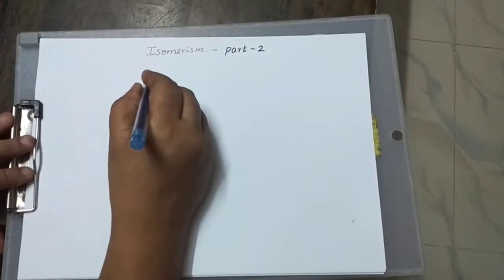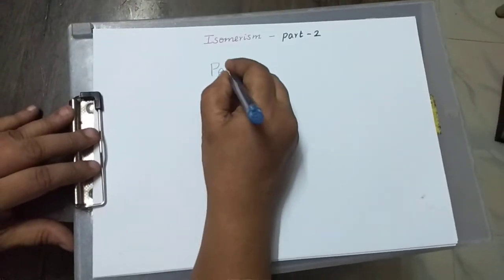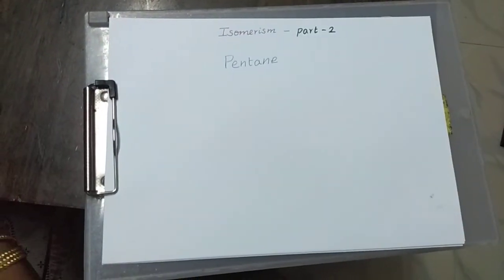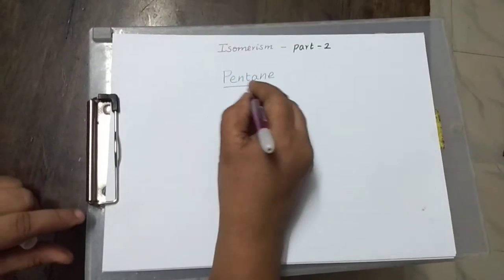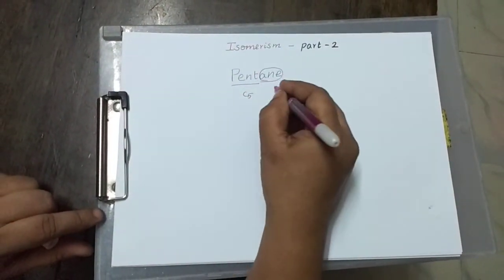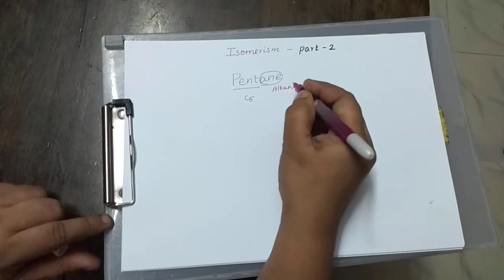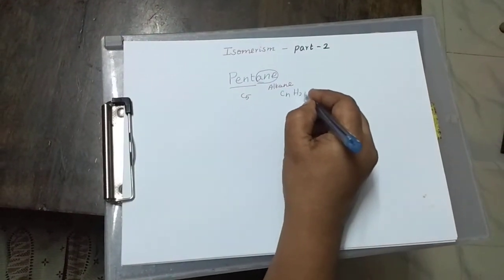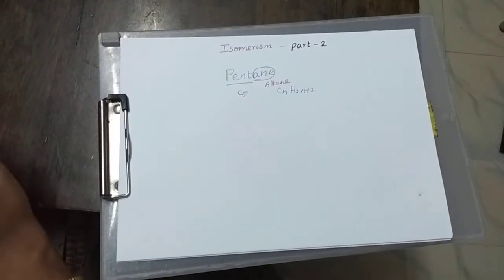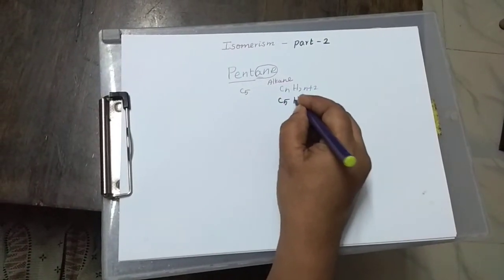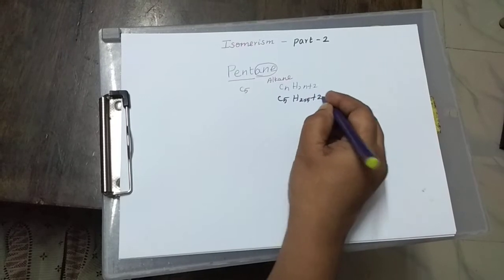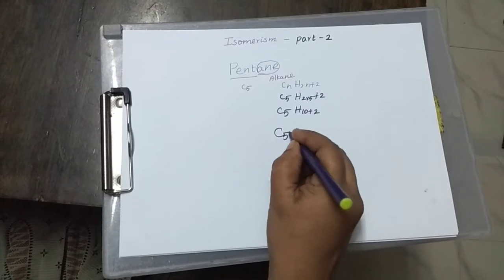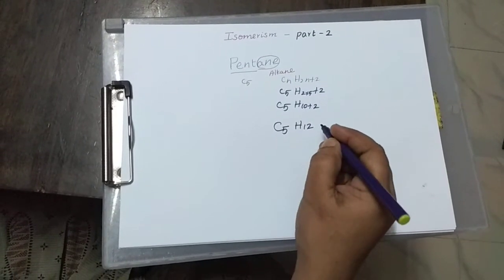Let us take pentane. What is the formula for pentane? 'Pent' means carbon number 5, and 'ane' means it is the alkane family. The general formula for alkane is CnH(2n+2). Substituting n=5: C5H(2×5+2) = C5H12. So the formula for pentane is C5H12.